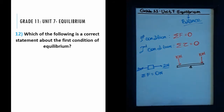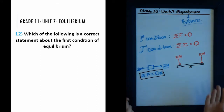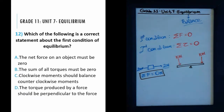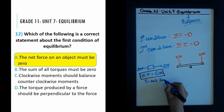The question asks about the first condition, which is: the summation of all forces equals zero. Looking at the choices — choice A says the net force of an object must be zero. Yes, that is our first condition. Net force, or summation of forces, is the same as the resultant force once you add all forces together.